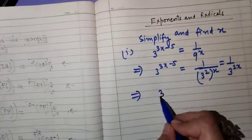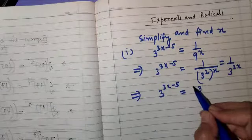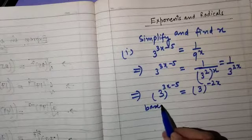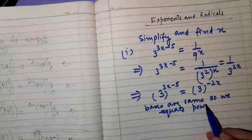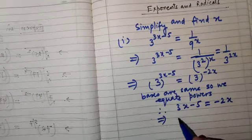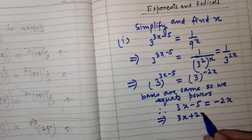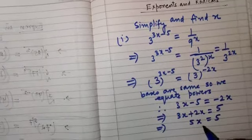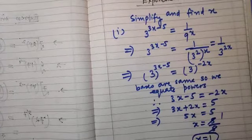So this implies 3 raised to the power 3x minus 5 is equal to 3 raised to the power minus 2x. Now bases are the same, so we equate the powers. Therefore 3x minus 5 equals minus 2x. Transposing like terms: 3x plus 2x equals 5, so 5x equals 5, and x equals 5 upon 5, giving x equals 1.